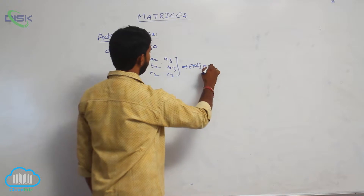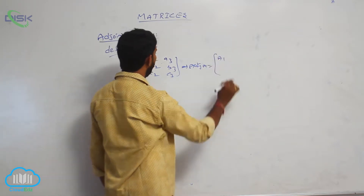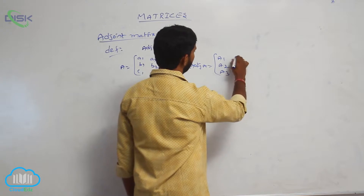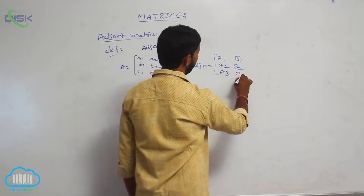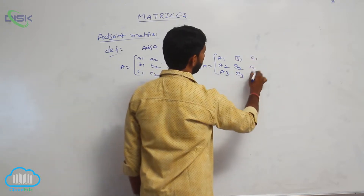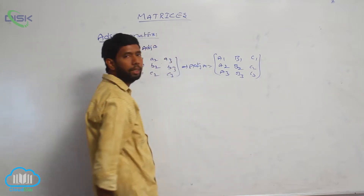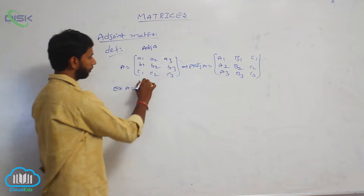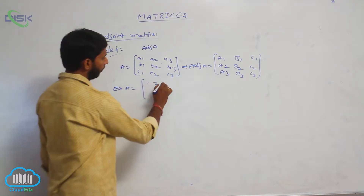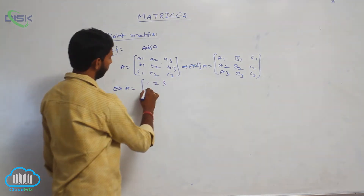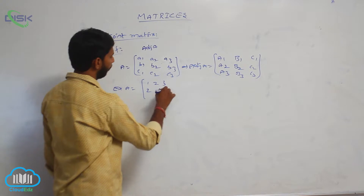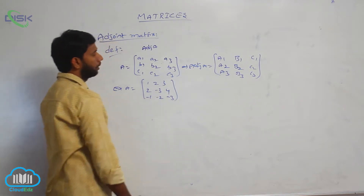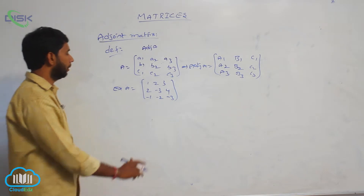Then adjoint A is the transpose of the cofactor matrix. For example, suppose A is equal to the matrix: 1, 2, 3 in the first row; 2, minus 3, 4 in the second row; minus 1, minus 2, minus 3 in the third row.